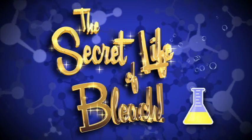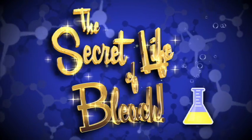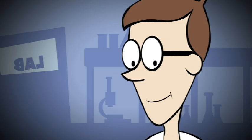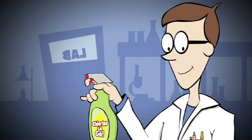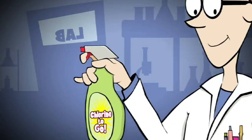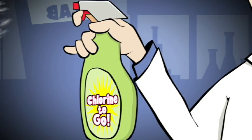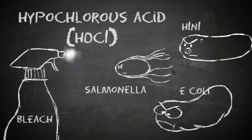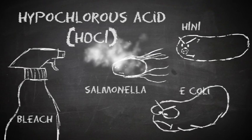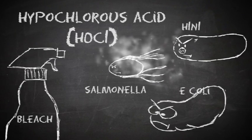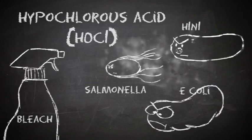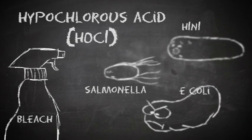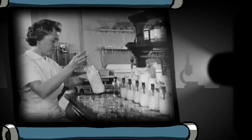The secret life of bleach. You know bleach as an all-purpose disinfectant, all the germ-busting power of chlorine in a handy container. Bleach unleashes a form of chlorine that is a major problem for germs like E. coli, salmonella, and flu viruses.